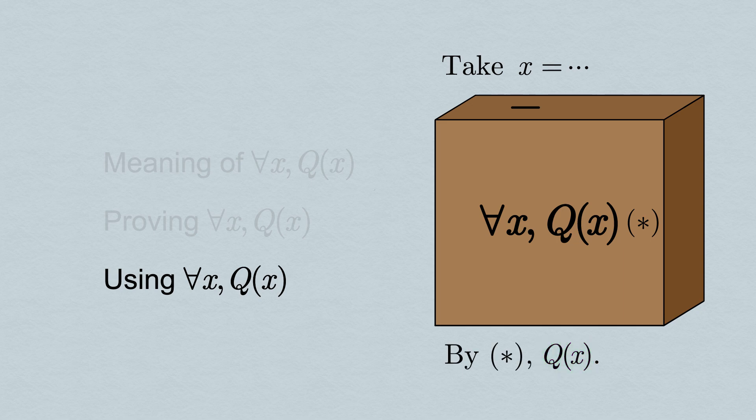Again, it's a simple process to use a for all statement. Simply declare the value of x that you want to apply the statement to, and reference it as your justification that Q(x) is true for your value of x.